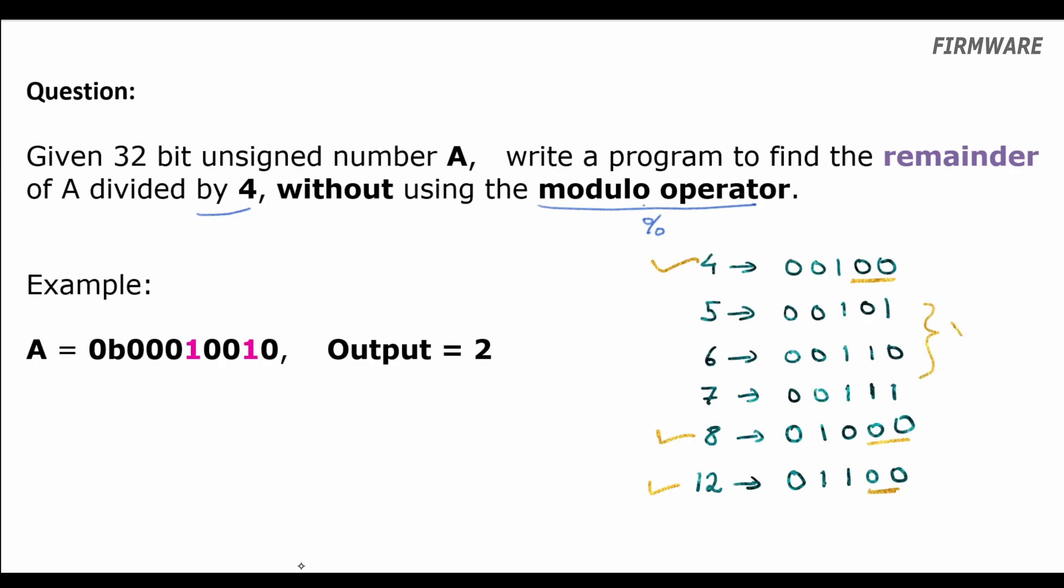So, using the concept of masking, we can do A and 3 to extract the last two bits in A. So, simple solution.